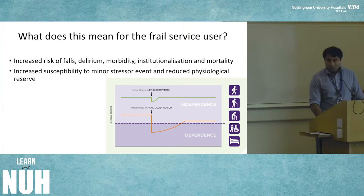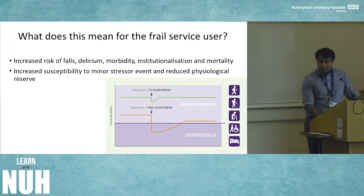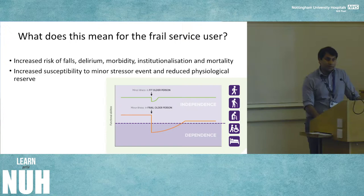Imagine two people: a fit older person represented by the green line and a frail older person by the red line. The same event occurs — a fall, medication change, infection, or an operation. The fit older person has a dip in function, recovers rapidly back to full function, and gets on with day-to-day life. Those who are frail have a much larger dip in function, drop below the line of dependency, take longer to recover, and may or may not achieve their pre-morbid functional state.